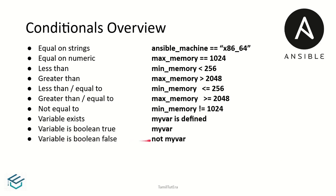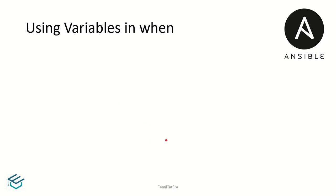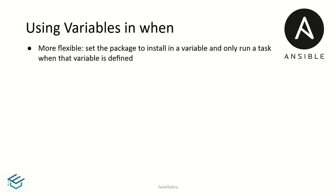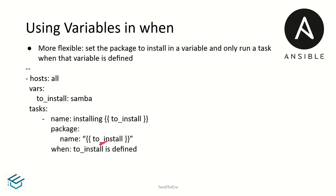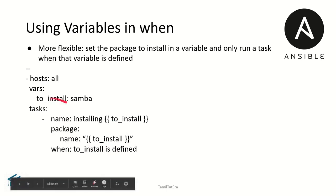The next variable is boolean false — not my_var, meaning not condition applies, so false is checked. Variables are used. To install — if the variable is defined, in that case we will check. Let's get a variable with when condition: to_install is defined.